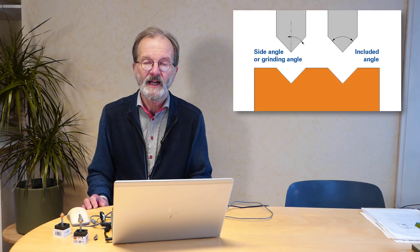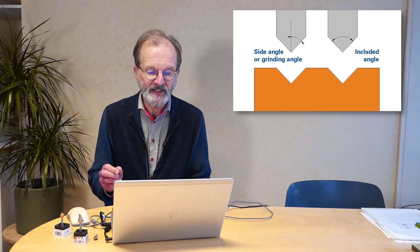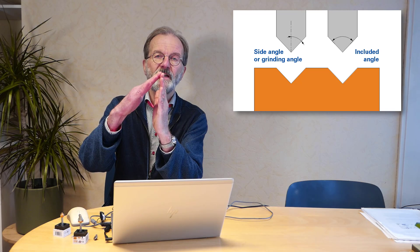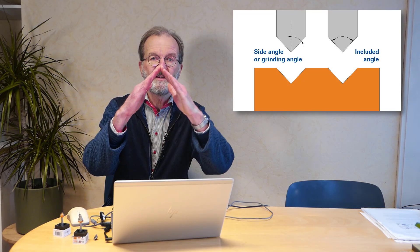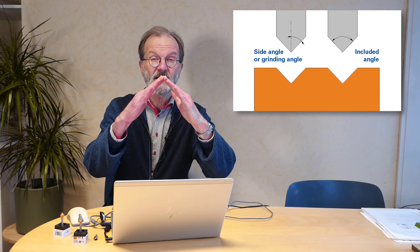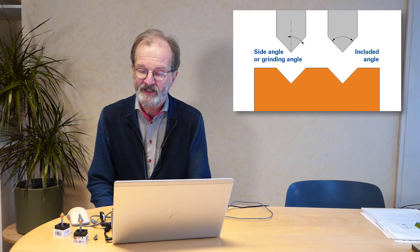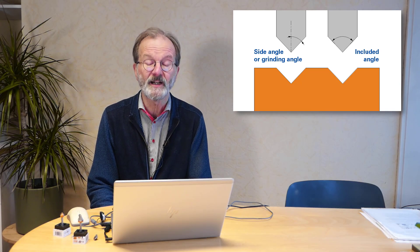For v-carving you need a v-shaped cutter. Here I have a few. You can see the v-shaped tip of the cutter. It's also called a v-bit, and its most important characteristic is the angle of the v. That can be defined in two ways: you can define the side angle of the v, or you can note the included angle of the v, which is exactly twice as large. So take care to use the correct number for your cutter definition.